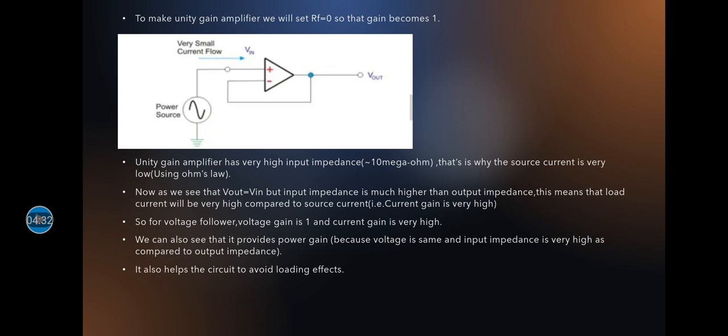So for voltage follower we have voltage gain is 1 and the current gain is basically the load current by source current. We know that load current is much much higher than the source current, which implies that current gain is very high.